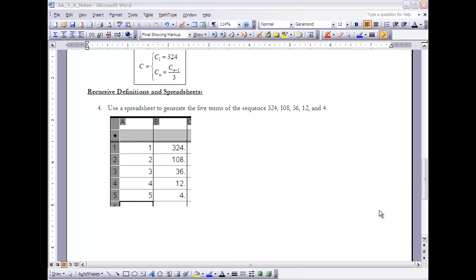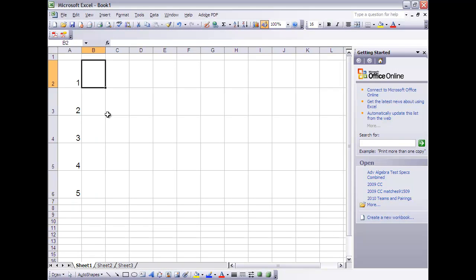The last topic that we're looking at in this section is using a spreadsheet to do a recursive definition. Now you can use a spreadsheet on your calculator if you just go to your home key and select Spreadsheet. You can enter this: in one of the columns, you're going to enter your term numbers, like 1 through 5. And then in the other column—and I'm going to do it actually in a Microsoft Office Excel spreadsheet—I can enter the first term, 324, and then each term is dependent upon the previous term.